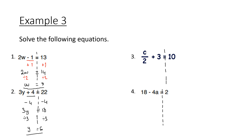Question 3: c divided by 2 plus 3 is equal to 10. First, get rid of the 3 by subtracting 3 from both sides, leaving c divided by 2 equals 7. Then, opposite of divide is multiply, so multiply both sides by 2, giving c equals 14.